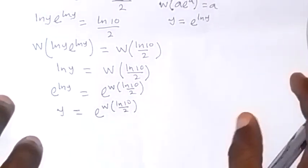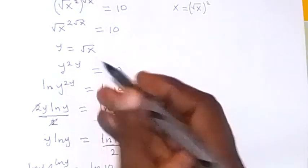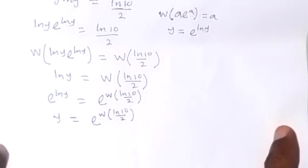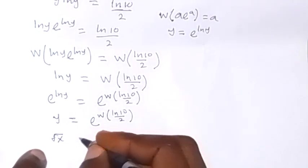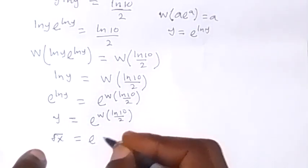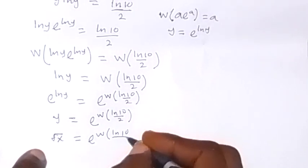Then we recall from here that y is the same thing as root x. So now let's bring that here. We have root x now, which is y, equals to exponent W of ln 10 over 2.